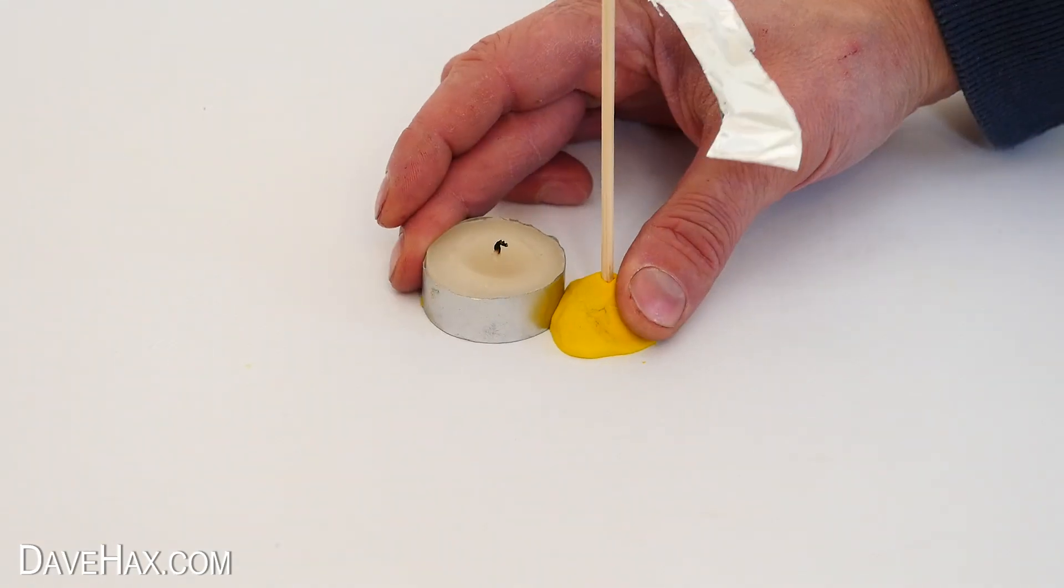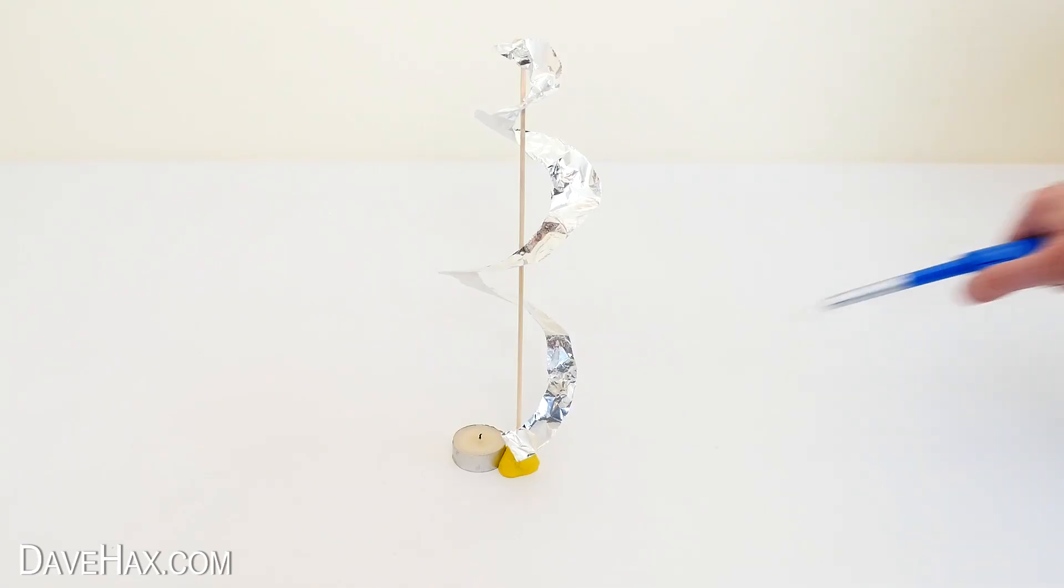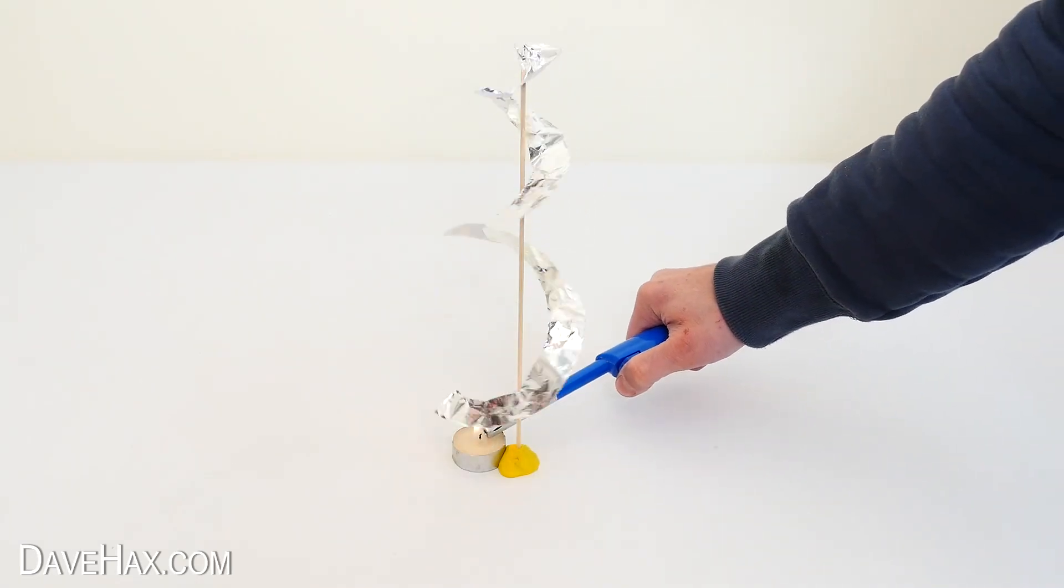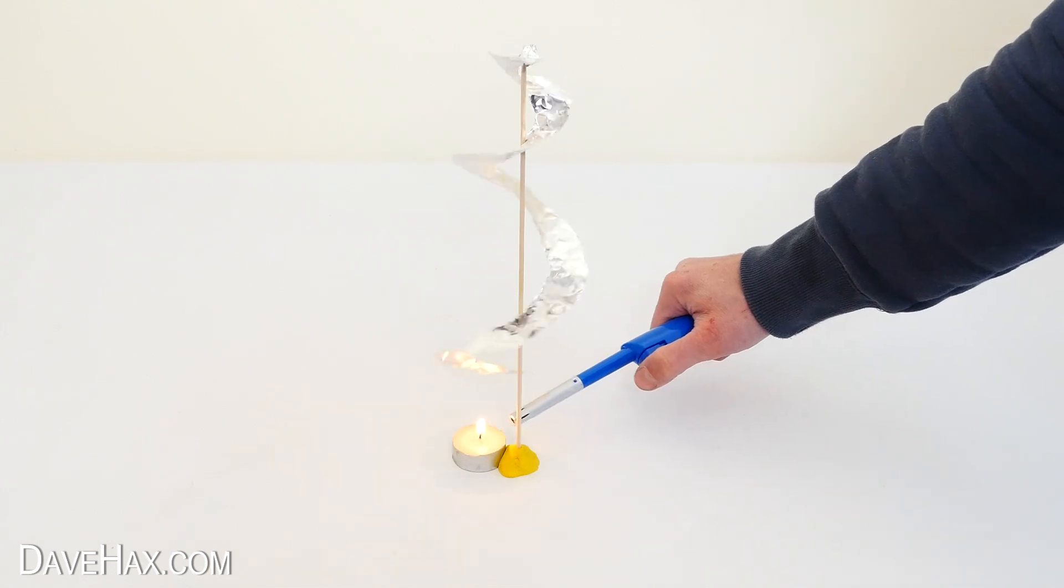Next place a tea light candle underneath and light it up. And you can see straight away it starts to rotate. The rising heat from the candle flame causes the foil to spin like a turbine.